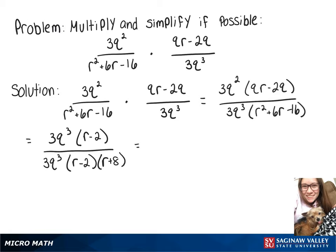Now we can rewrite this as 3q to the third over 3q to the third times r minus 2 over r minus 2 times 1 over r plus 8.